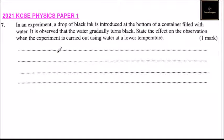So the molecules of water are at a lower temperature, the molecules are compact. That is, they are close to each other. And therefore, what will happen is that the rate of water gradually turning black will reduce.